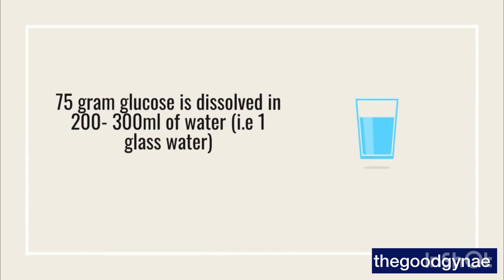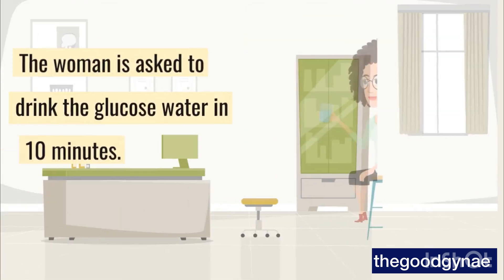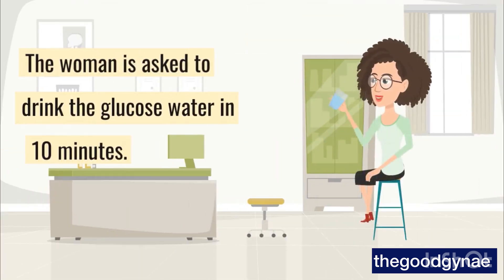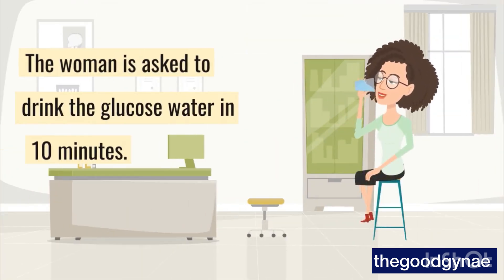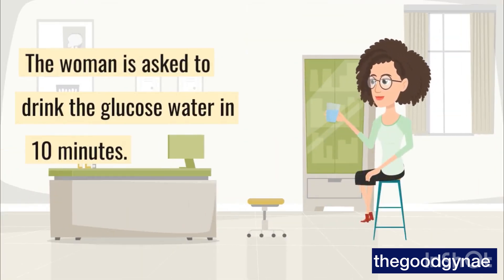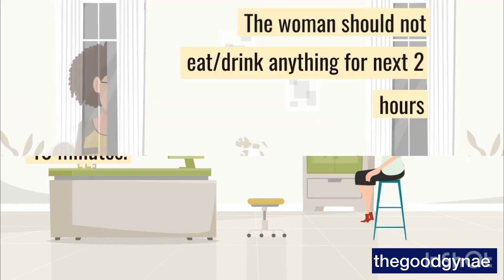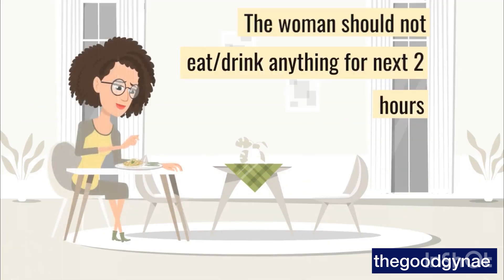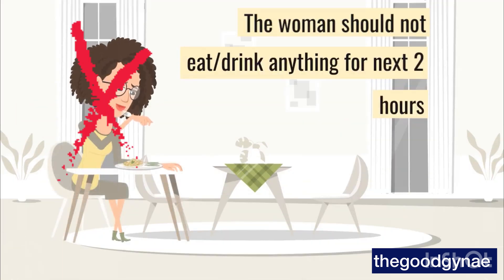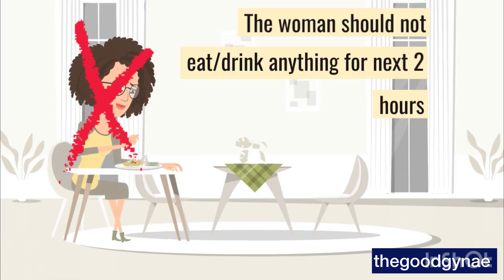75 grams of glucose is dissolved in 200-300 ml of water, i.e. one glass of water. The woman is asked to drink the glucose water in 10 minutes. The woman should not eat or drink anything for the next 2 hours.